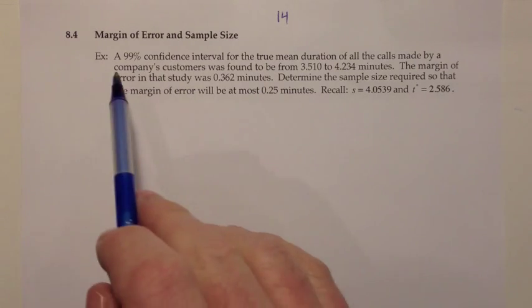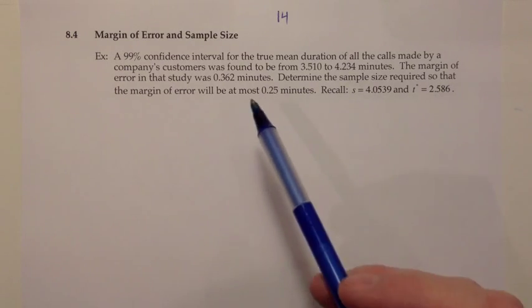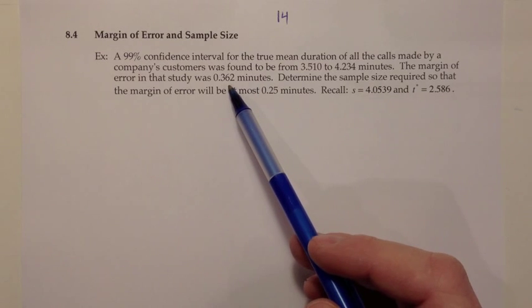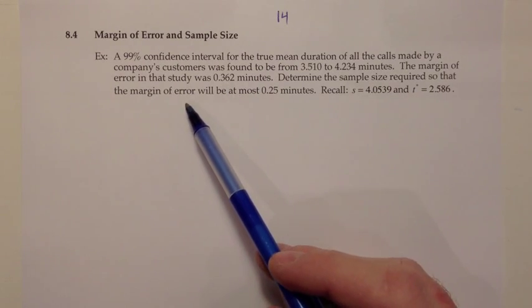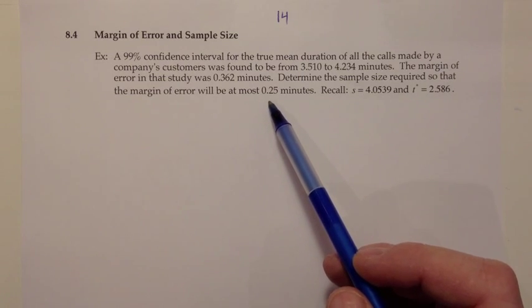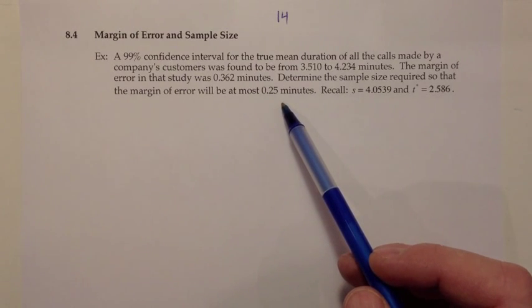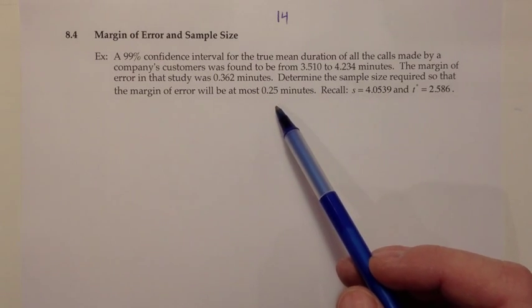Remember that the T-star comes from the confidence level. Even though we had a margin of error of 0.362 minutes, that was not good enough. They wish the margin of error was lower, as low as 0.25 minutes or smaller. That would be the biggest margin of error that would be acceptable. So what we want to do is try and figure out the sample size for that.